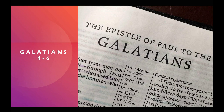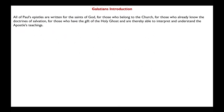In this presentation, we are going to take a look at principles and doctrines found in the book of Galatians, chapters 1 through 6. This is by way of introduction. All of Paul's epistles were written for the saints of God, for those who belong to the church, for those who already know the doctrines of salvation, for those who have the gift of the Holy Ghost, and are thereby able to interpret and understand the apostles' teachings. The epistles were not meant for non-members; they were meant to help members and newly converted members of the church who had already been taught the basic gospel principles.